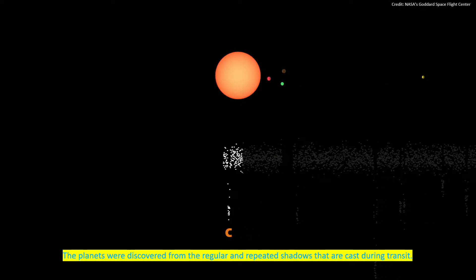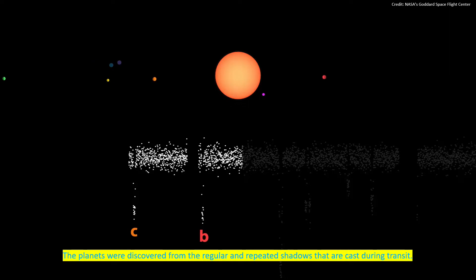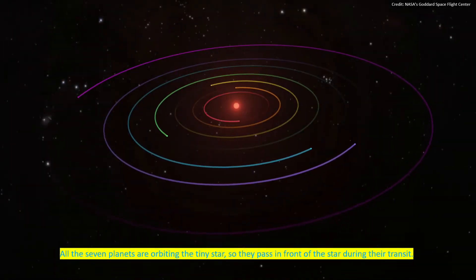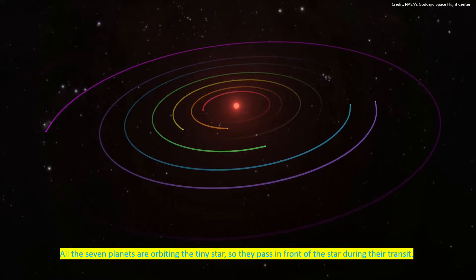The planets were discovered from the regular and repeated shadows that are cast during transit. All seven planets are orbiting the tiny star so they pass in front of the star during their transit.